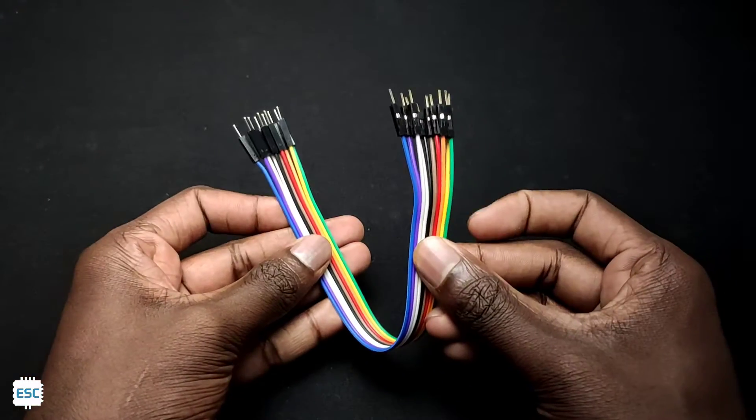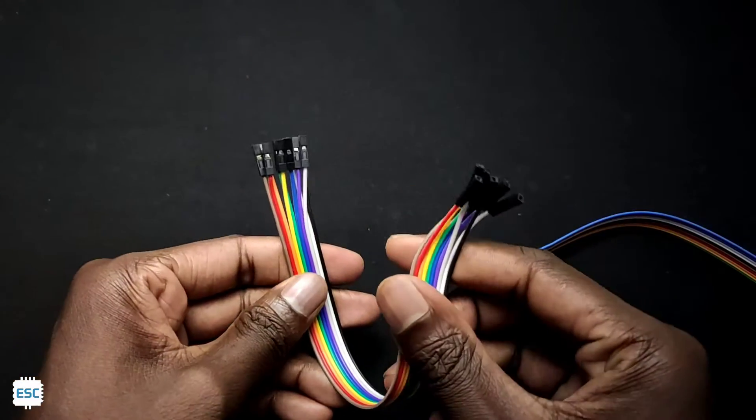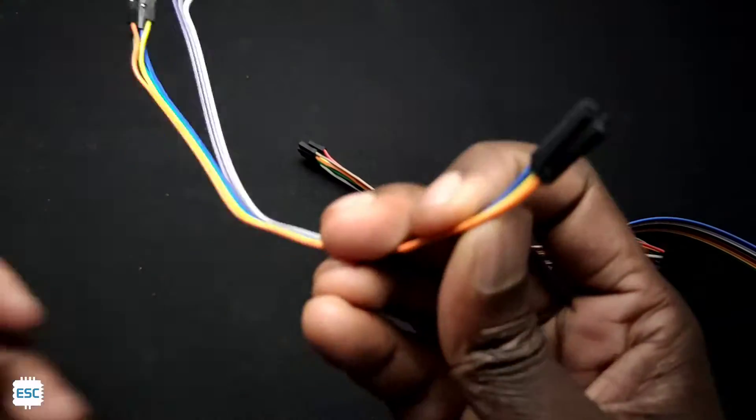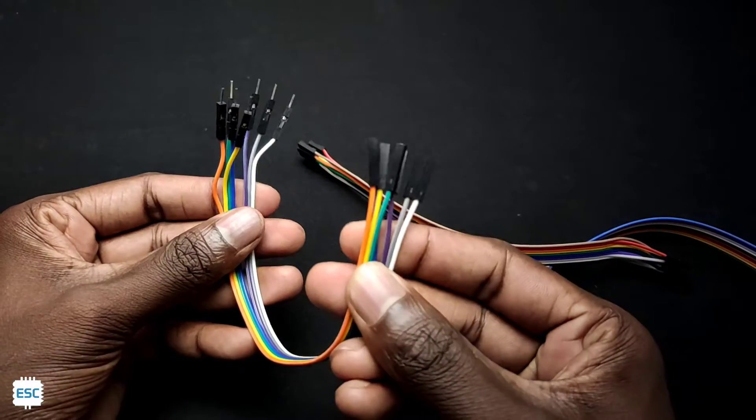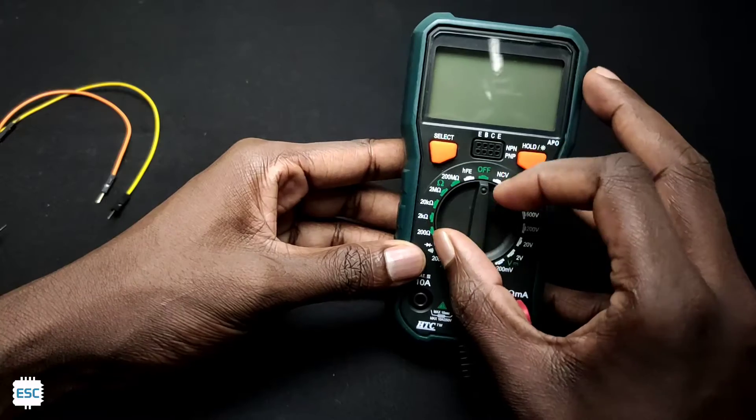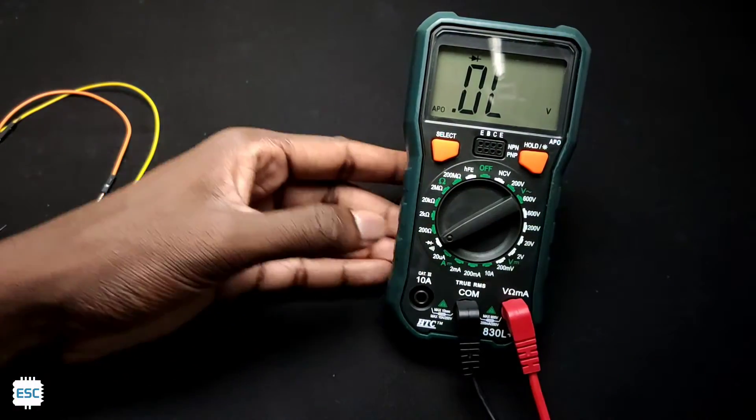Jumper wires are three types: male to male, female to female, and male to female. These wires are good for testing the circuit on the breadboard, but sometimes faulty jumper wires can kill a lot of time.